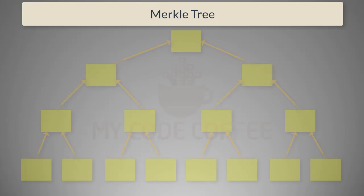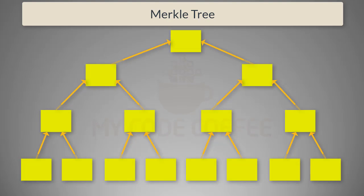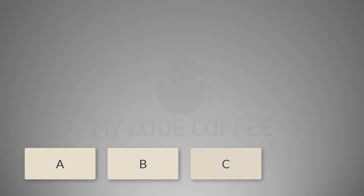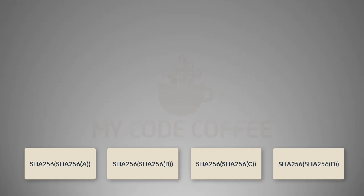Here let us first understand how Merkle root is calculated, and then we will talk about Merkle path. Merkle tree is called a tree because it is a binary branched data structure, but this tree is upside down and the root is at the top. Let us assume that there are four transactions A, B, C, and D. The leaves of the Merkle tree will be the double hash of these transactions.